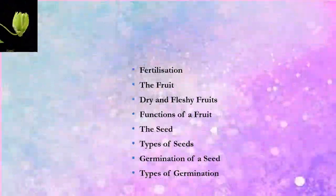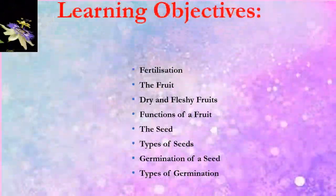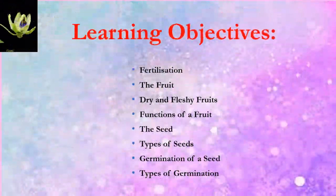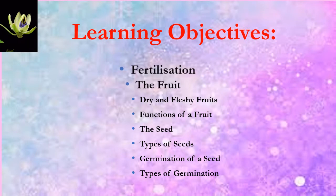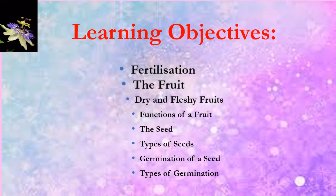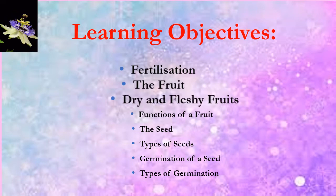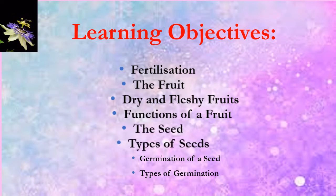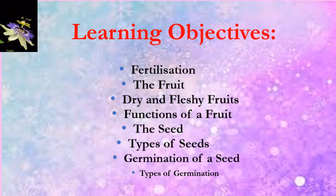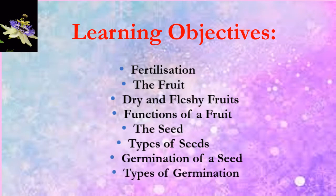The main learning objectives of this module are: fertilization, the fruit, dry and fresh fruits, functions of a fruit, the seed, types of seeds, germination of a seed, and types of germination.